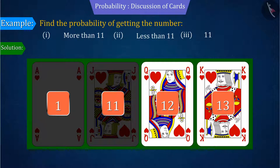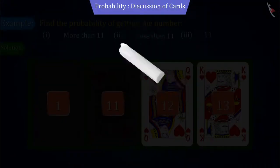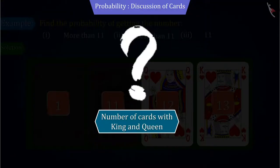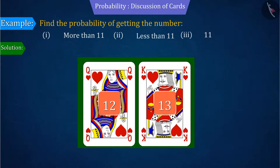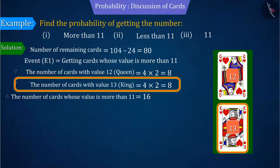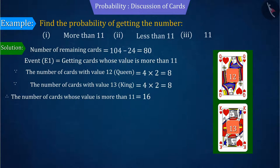So can you tell me how many Queens and Kings are there among these cards? Right answer. From the remaining cards left, we can tell that we have a total of 16 cards of Queen and King.